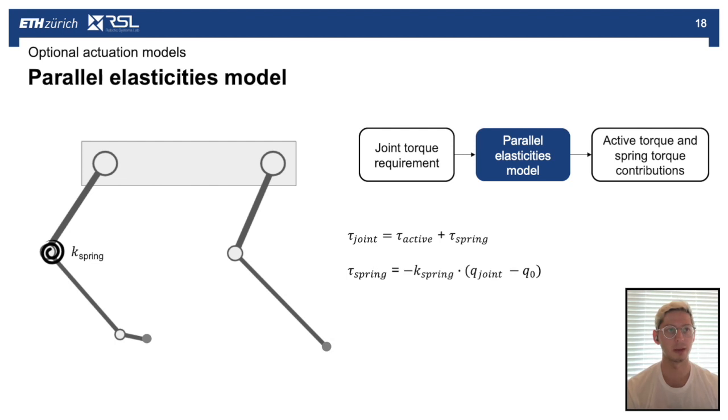First we have the parallel elasticities model. This would be the inclusion of a torsional spring in parallel with the joint. The joint torque which is necessary for tracking the motion is made up of the sum of an active component which is supplied by the actuator and a passive component which is due to the spring's deformation.